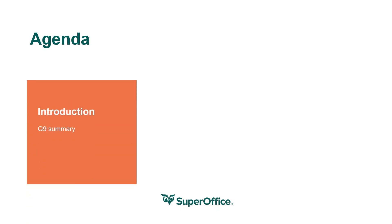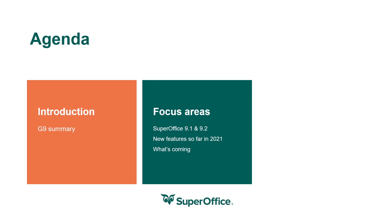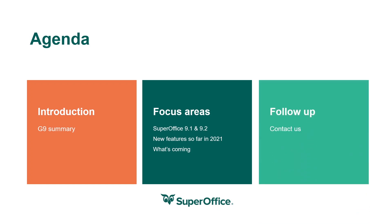I'm going to use approximately 30 minutes today. We will start by taking a look back at our most important releases in SuperOffice Generation 9 so far, then dive into some features in SuperOffice 9.1 and 9.2, look at some new features in 2021, what's coming, and at the end give you information on how to get started with Generation 9 and where to contact us.